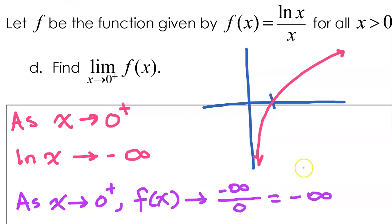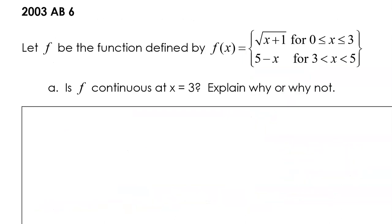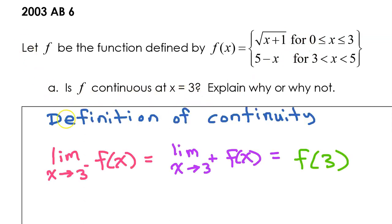So we should say that the limit does not exist. Let's move on to free response question number 6 from the 2003 exam. Function f is defined by a piecewise function, and we have to figure out if it is continuous at X equals 3. According to the definition of continuity, if f is continuous at X equals 3, then the limit as X approaches 3 from the left must equal the limit as X approaches 3 from the right, which must also equal the value of the function at 3.